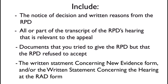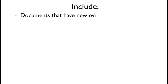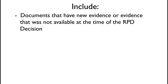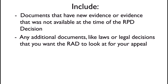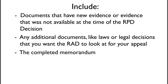Also include: documents that you tried to give the RPD but that the RPD refused to accept; the Written Statement Concerning New Evidence form and/or the Written Statement Concerning the Hearing at the RAD form; any documents that have new evidence or evidence that was not available at the time of the RPD decision; any additional documents like laws or legal decisions that you want the RAD to look at for your appeal; and finally, the memorandum that you just completed.